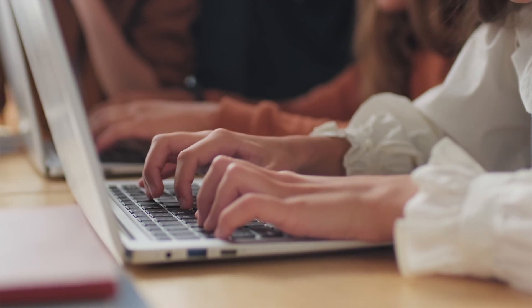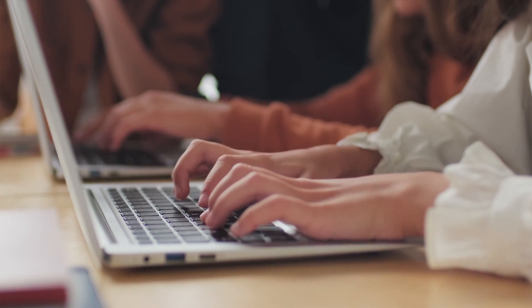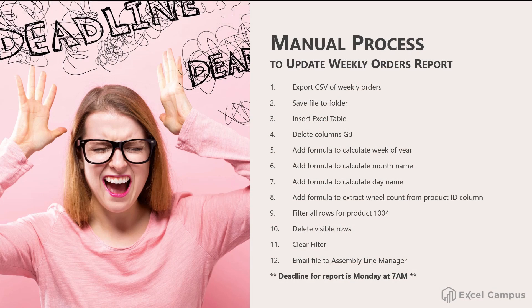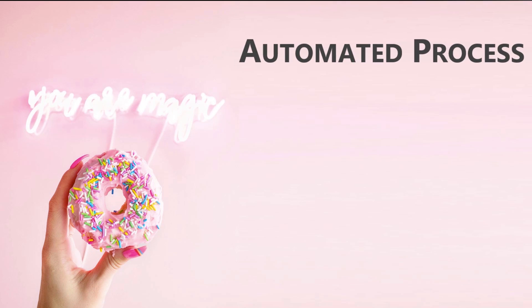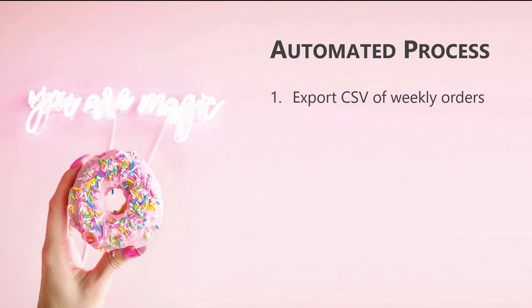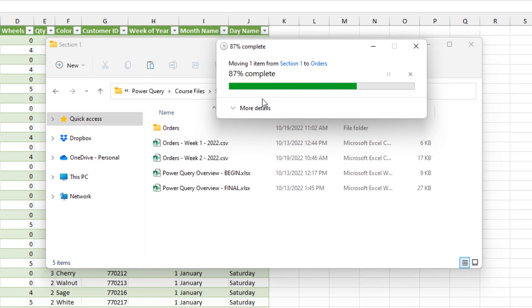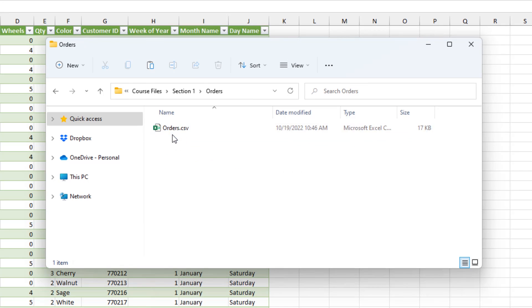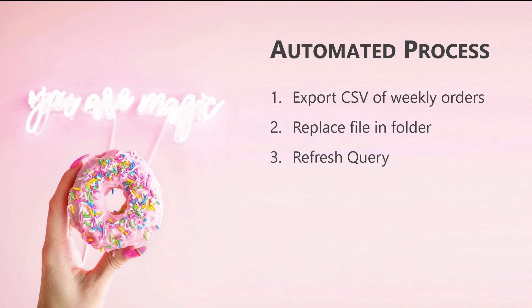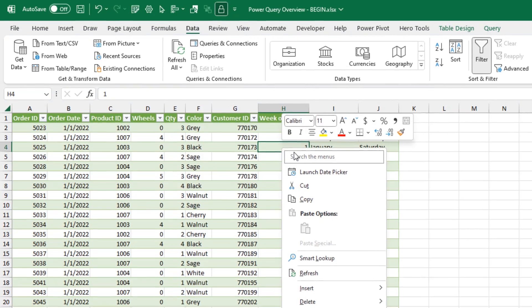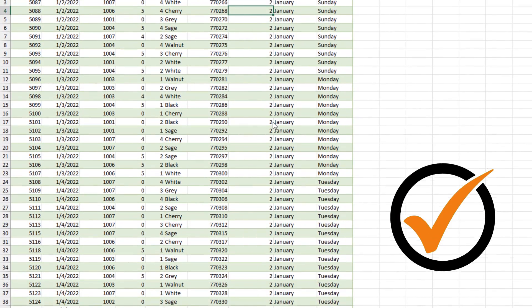If this is just one of your tasks and you have 10 or 12 other projects for cleaning up data, it starts to get stressful — all these deadlines, all these different projects. But with the automated process using Power Query, it really turns into a three-step process: first, export the data as a CSV file from your store; second, replace the file in the folder by dragging it in; and third, open Excel, right-click, and refresh the query. That's it — a three-step process and it's done.